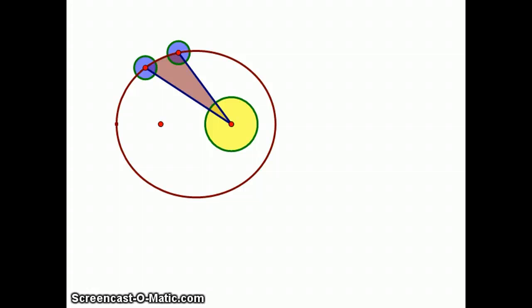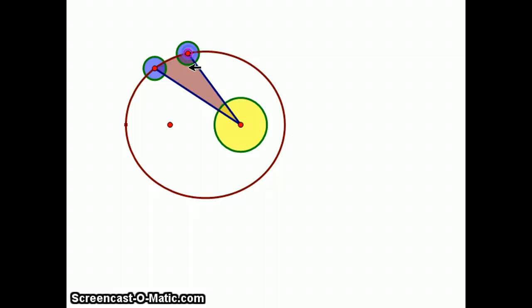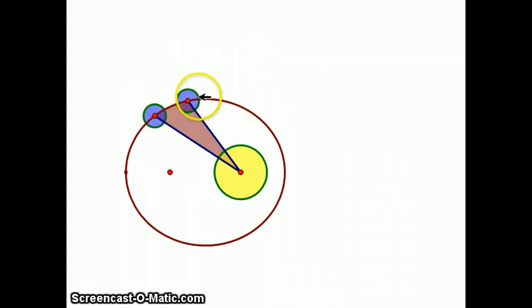What Kepler says is that the planet will sweep out equal areas in equal times. So if the planet moves from here to here, and it takes, say, a month to get from here to here, then in the same period of time, the planet goes slower.